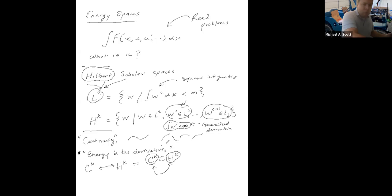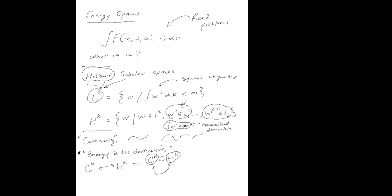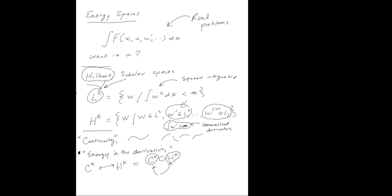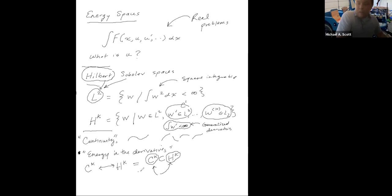So when we get to finite elements, what you'll notice is that we often work in CK in order to approximate functions in HK, and the reason we do that is because of this very close relationship between these spaces. Dr. Scott, why would we want to approximate those additional functions in HK? What's their importance with finite elements — we're working in CK because we can, but then we want to get these additional functions from HK?